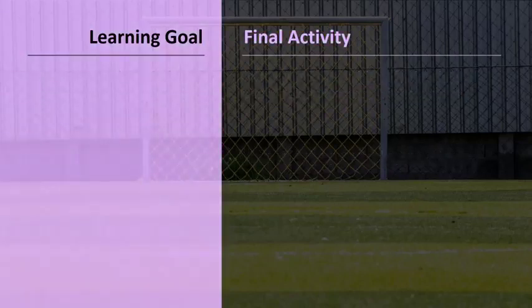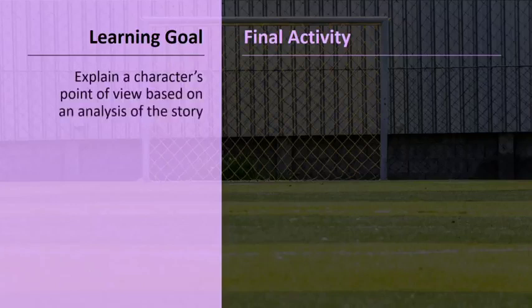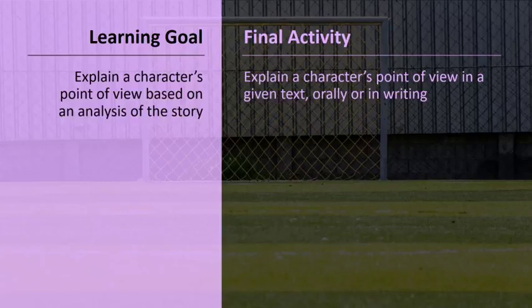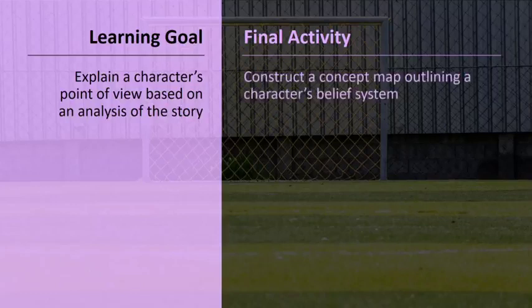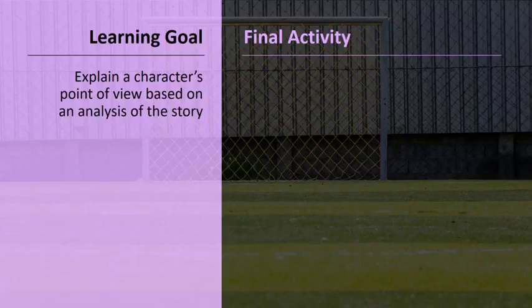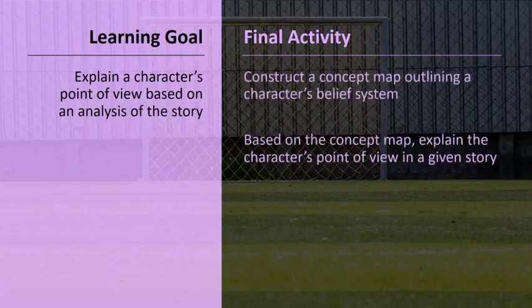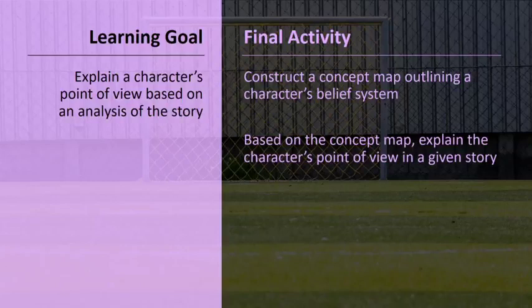As a final example, if a teacher wants to know if students can explain a character's point of view based on the analysis of a story, then an instructional activity asking students to explain the character's point of view in a given story, orally or in writing, would provide good evidence of learning. But having students construct a concept map outlining a character's belief system would not — this example differs in both content and performance demand. However, an appropriately designed concept mapping activity could help students acquire the understandings they need to explain a character's point of view. Combining the two activities provides the best alignment with the learning goal.